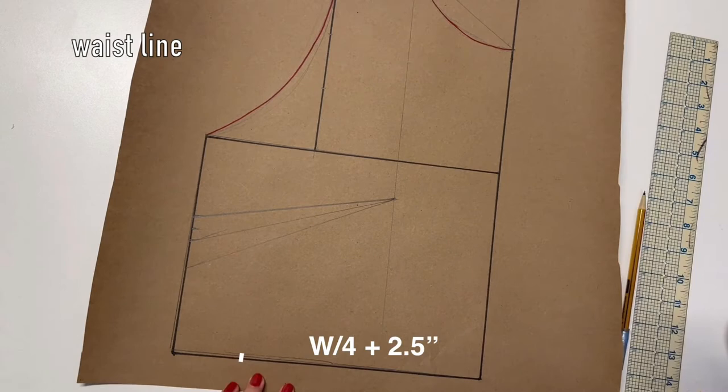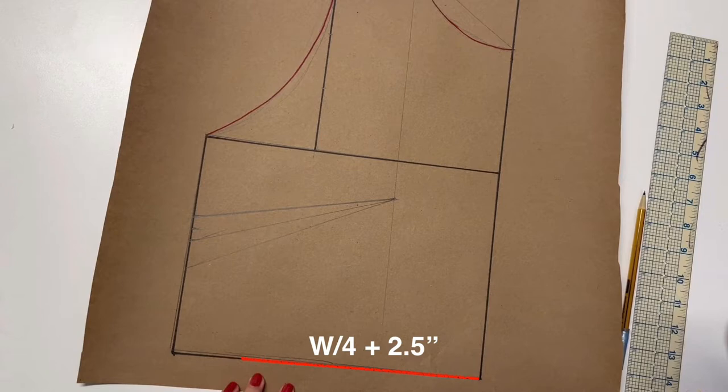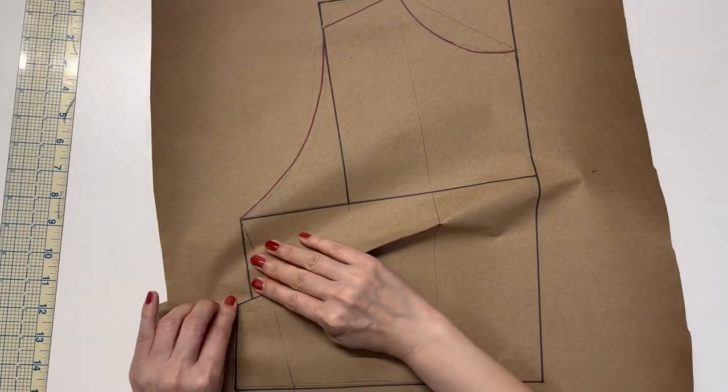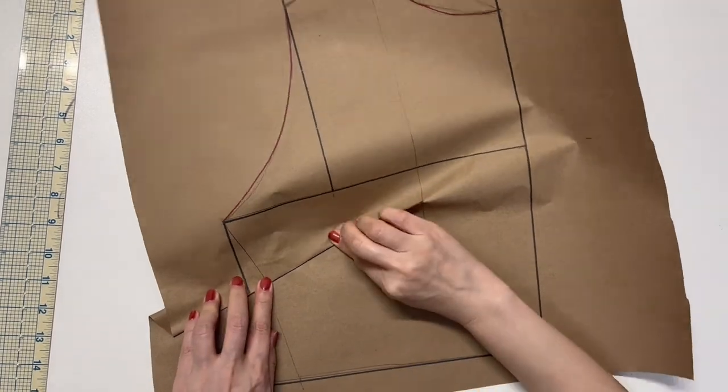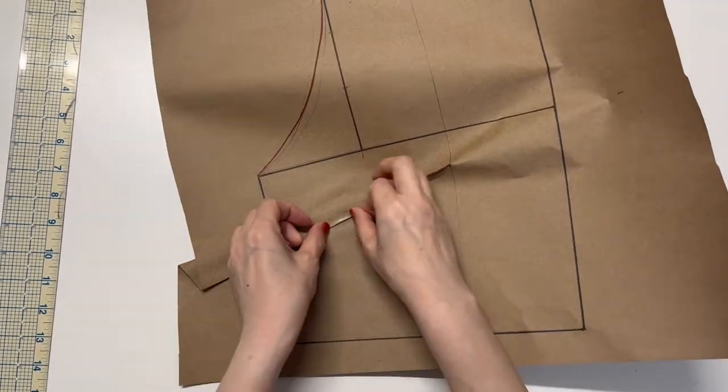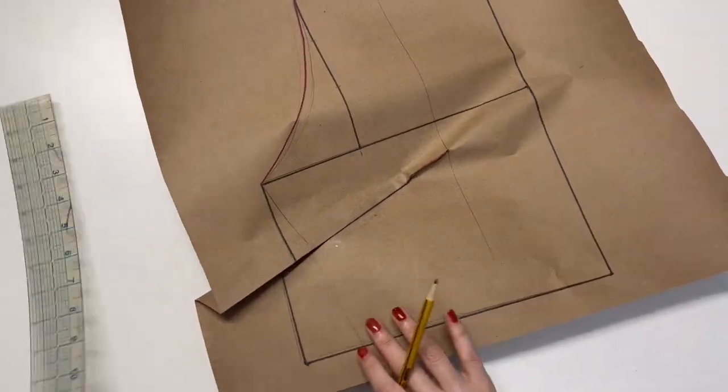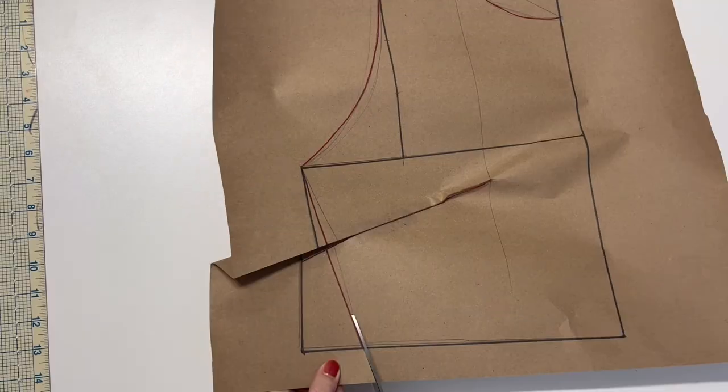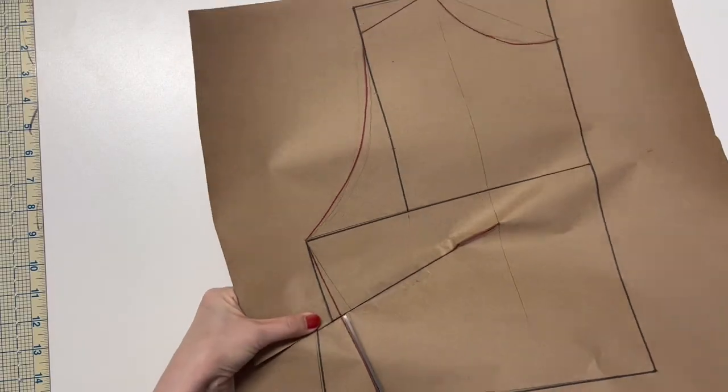Mark a quarter of your waist circumference plus two and a half inches on the waistline. It's gonna be your waistline in this dress. For the dart, tape it. Connect from the armpit to the end of the waistline and cut the front bodice.